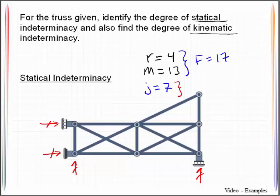And that means then that the total number of equilibrium equations I have, 7 joints multiplied by 2 equilibrium equations per joint. That's summation of forces in the x and summation of forces in the y. And that will give me a total of 14 equilibrium equations.